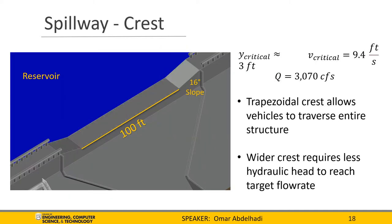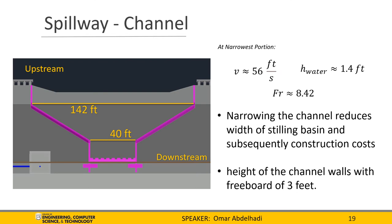The shape of the spillway crest is trapezoidal and has a base width of 100 feet. With a wide crest, it takes relatively little hydraulic head to achieve the desired flow rate, minimizing construction costs due to extra dam height. Additionally, a trapezoidal crest with a slope of 16 degrees allows a vehicle to traverse the entirety of the dam structure without the use of a bridge. Taking into consideration the head above the spillway crest required to achieve the desired discharge, as well as freeboard, the total height of the spillway crest is 6 feet. The channel conveys the water down the face of the dam into the stilling basin, starting at a width of 142 feet and narrowing down to 40 feet. The height of the channel walls, taking into consideration the height of water and freeboard, is 3 feet.